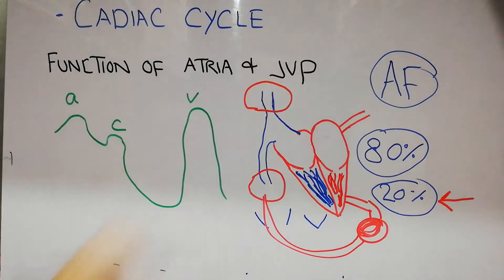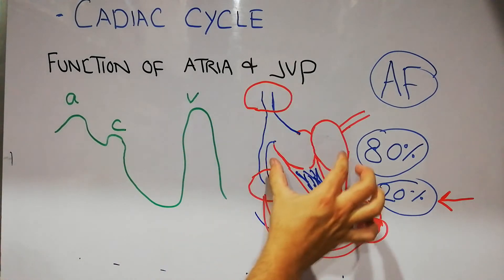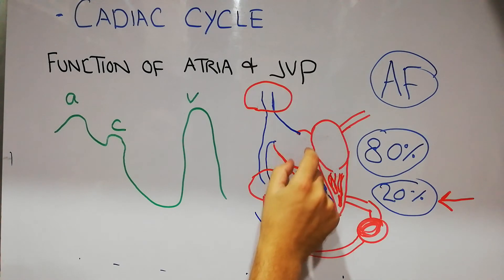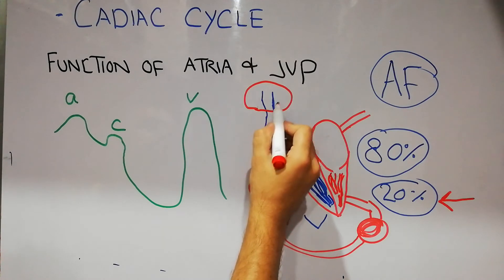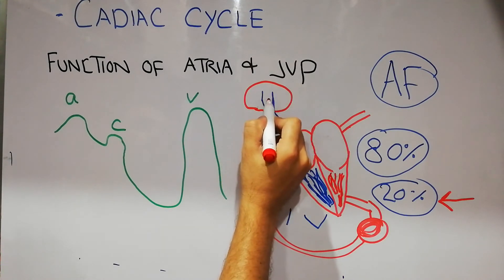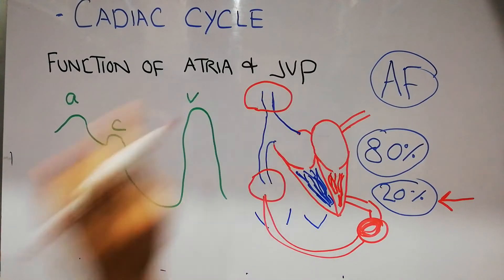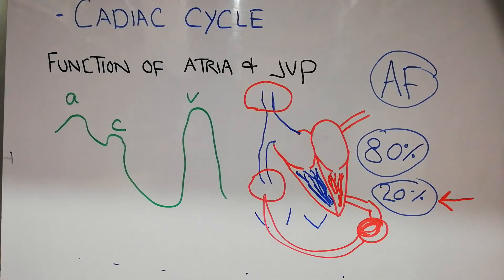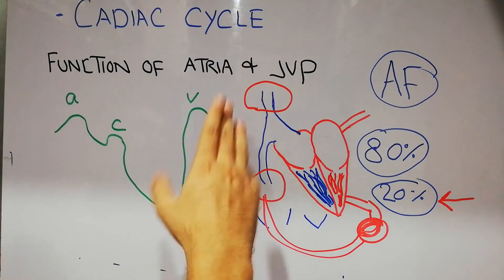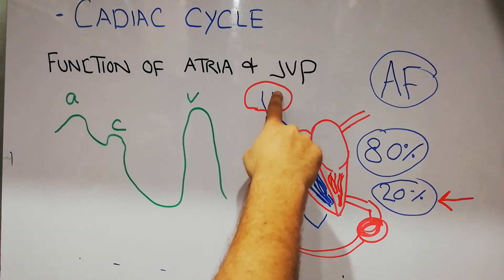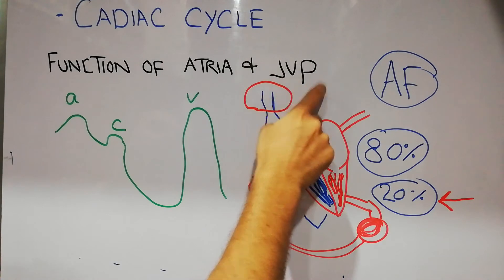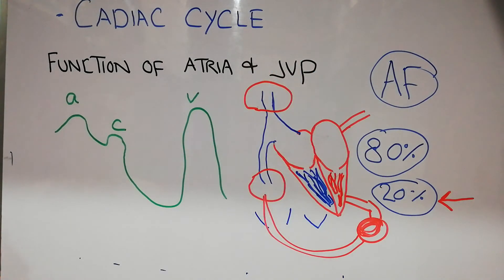Now, coming to the waves of atrial contraction — the JVP. When the atria contract, the pressure is transferred into the veins, and with the help of the jugular vein this atrial contraction can be seen in the neck of the patient. The waveform changes in the jugular vein that can be seen in the neck are known as JVP, or jugular venous pressure, and there are three very important waves in the JVP.